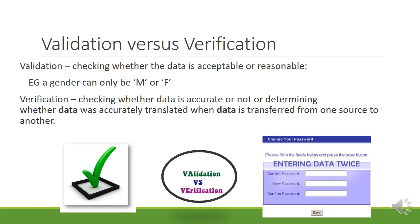Validation means that we check whether data that's being input is acceptable or reasonable. For example, a gender can only be M or F, or male or female. These days there are other genders, such as in Germany.